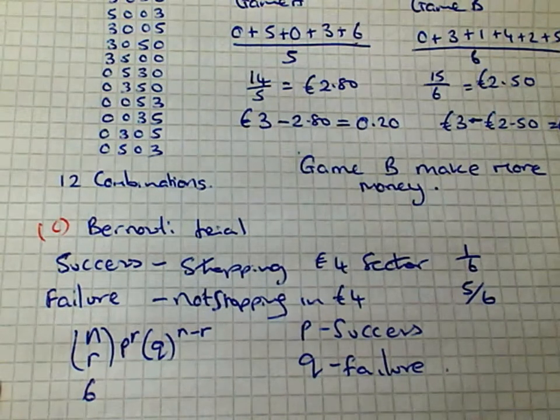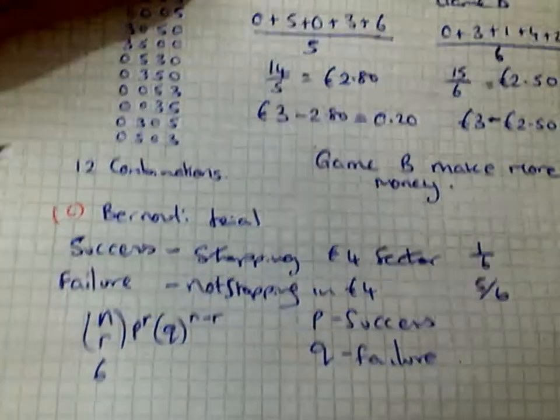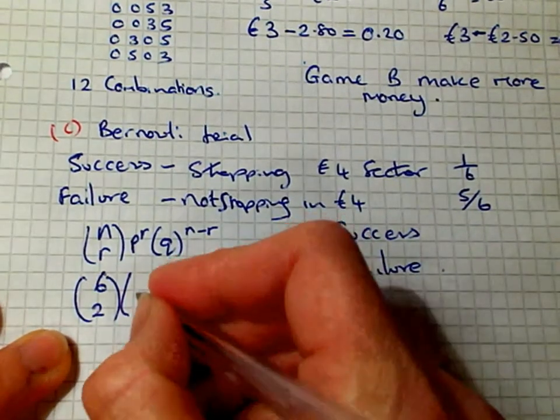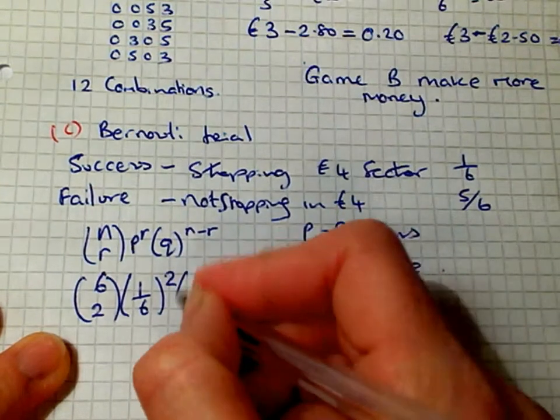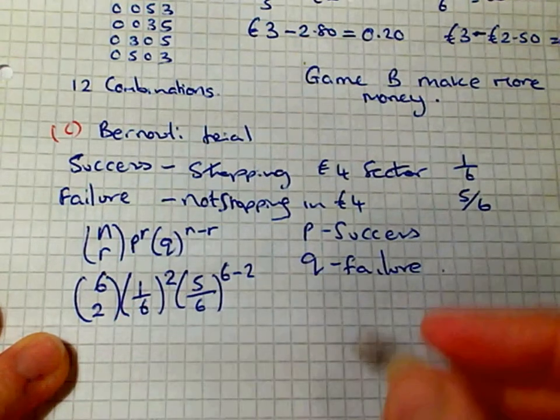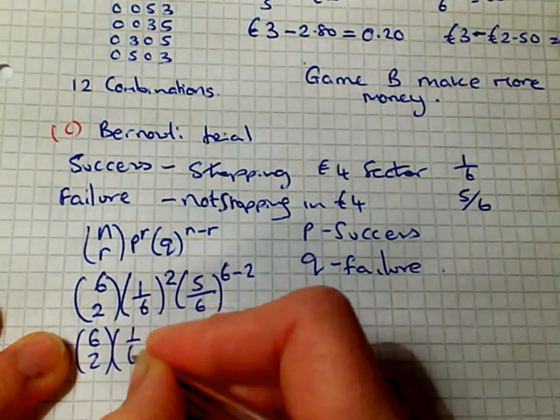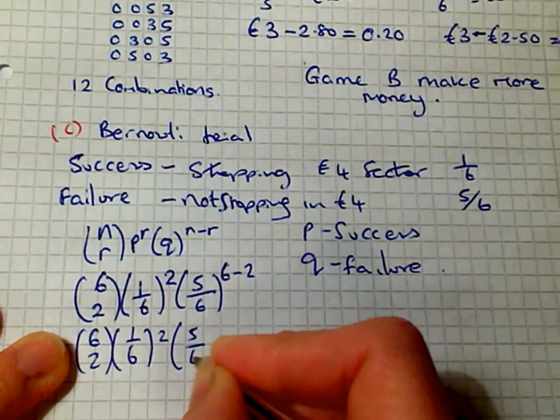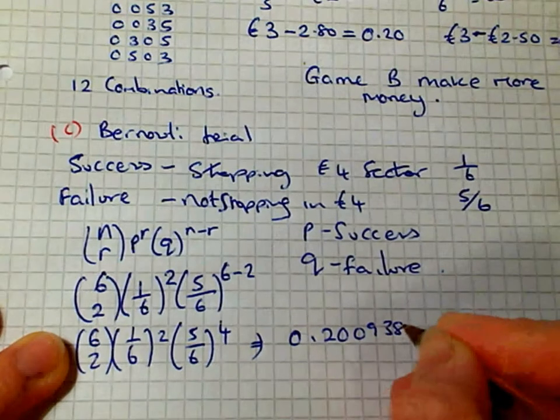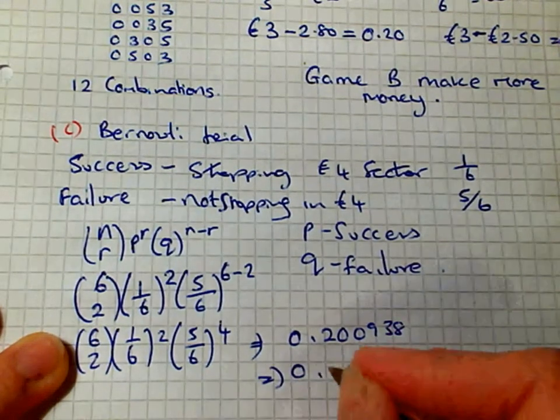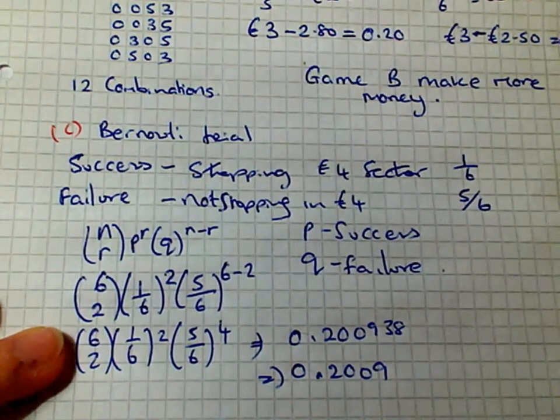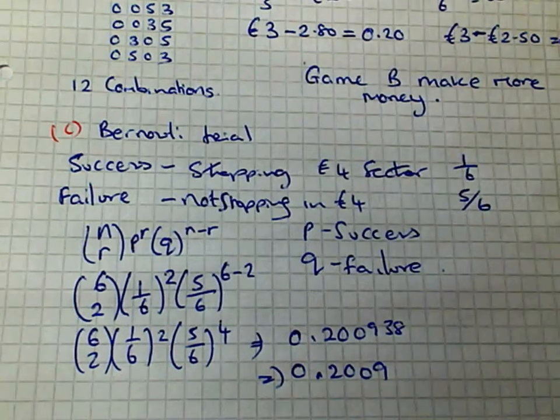She plays the game six times and we want the probability the arrow stops in the 4 euro sector exactly twice, so we want two successes. 6 choose 2 by 1/6 to the power of 2 by 5/6 to the power of 4, which gives us 0.2009 to four decimal places. So 0.2009 is the probability of it stopping in the 4 euro sector exactly twice.